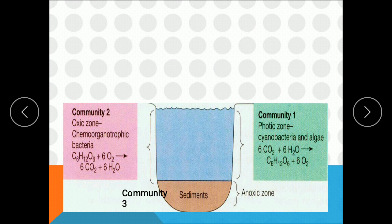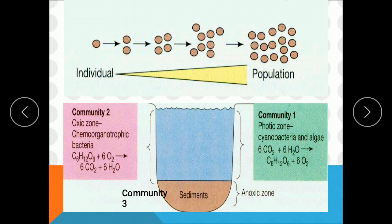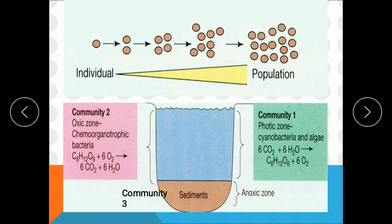In this diagram, you can see that a population is the collection of organisms of the same species. In a water body shown here, there are different communities called microbiocinosis. In community 1, the biotope is the photic zone, where different populations like cyanobacteria and other algae reside together. Community 2 is the oxic zone, where there is oxygen and all sorts of chemo-organotrophic bacteria are present.